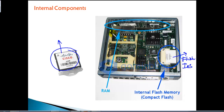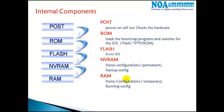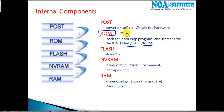Inside the router you'll also find RAM chips similar to normal computer RAM chips, and a ROM chip which stores the bootstrap program. The ROM chip tells how to load the operating system. To summarize: ROM is a chip that tells from where and how to load the IOS, and Flash is the component which stores the operating system.